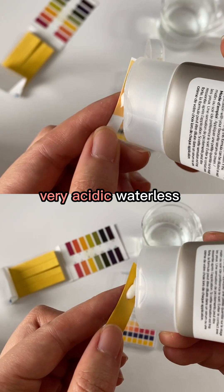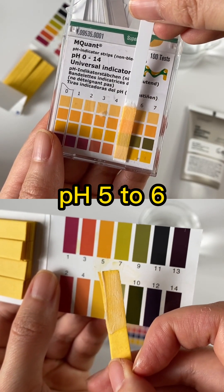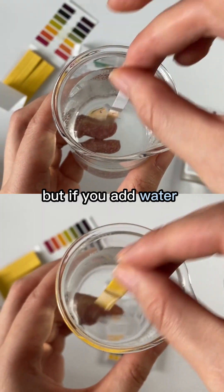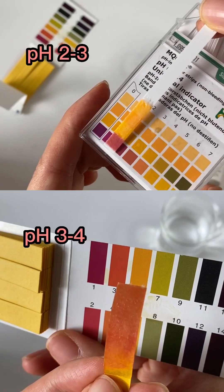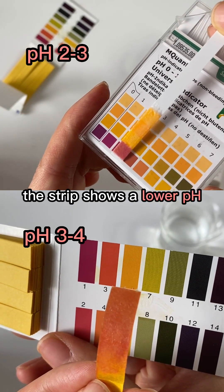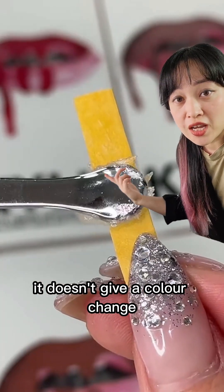But if you add water, which has higher pH, the strip shows a lower pH. Vaseline has no water, so it doesn't give a color change, so this test doesn't mean anything.